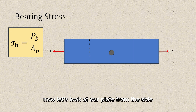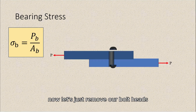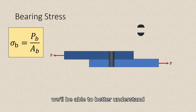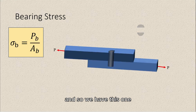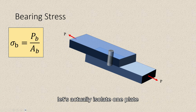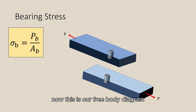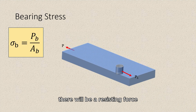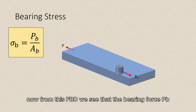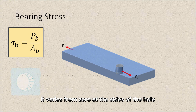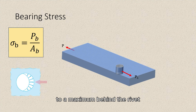Now let's look at our plate from the side. Let's remove our bolt heads so that we can make sense of the bearing area. In the isometric view of our connection, we'll be able to better understand how we can project an area. To draw the free body diagram, let's isolate one plate and analyze only the top part. This is our free body diagram — we have our applied force and then, to maintain equilibrium, there will be a resisting force, which is our bearing force Pb, equal to the applied load. As mentioned, the bearing stress caused by the rivet is not constant; it varies from zero at the sides of the hole to a maximum behind the rivet.